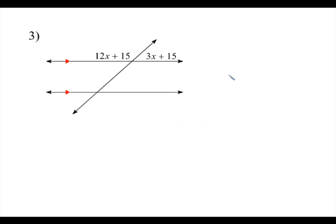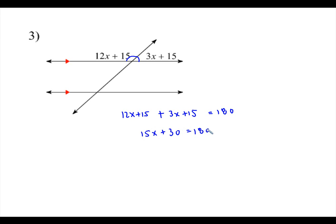Number three: I noticed that this angle here and this angle here are a linear pair, because they form a straight line. So linear pairs — these two angles add up to 180. So 12x plus 15 plus 3x plus 15 together have to equal 180. Combining terms on the left side: 15x plus 30 equals 180. Subtract 30 on both sides, we end up with 150. Divide by 15, so x is going to equal 10.